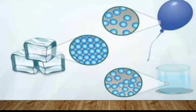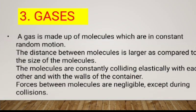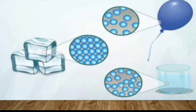For example, consider water in its different states: ice, which is solid; liquid water; and steam, which is gaseous. These represent the same substance in three different states of matter.